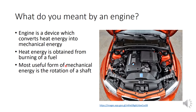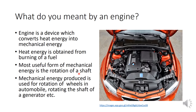The most useful form of mechanical energy is simply the rotation of a shaft. We are burning fuel and finally getting a shaft which is rotating at high speed, normally known as the crankshaft. This mechanical energy can be used for different purposes — for example, in an automobile for the rotation of wheels, or in a generator set for the rotation of the generator shaft to produce electricity. Overall, the engine produces mechanical energy derived from the chemical energy of fuel.